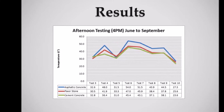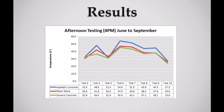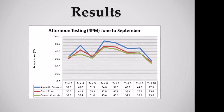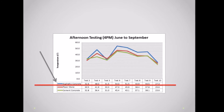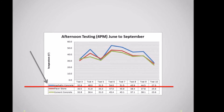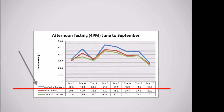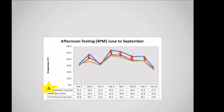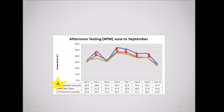As you can see in the graph, asphalt has proven to possess a higher surface temperature with a difference of up to 12 degrees Celsius, while both paver stones and concrete remain approximately the same.